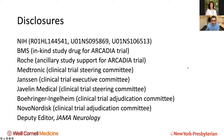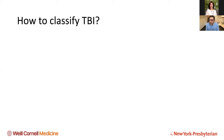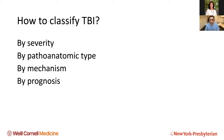The first thing to think about is how we might classify TBI. We're going to talk about severe TBI today — what does that mean? What do we mean by severe versus moderate versus mild? There's no one right or wrong answer. You can classify by clinical severity, by imaging findings — otherwise known as pathoanatomical type — by mechanism, by prognosis. There are lots of different ways of grading TBI.